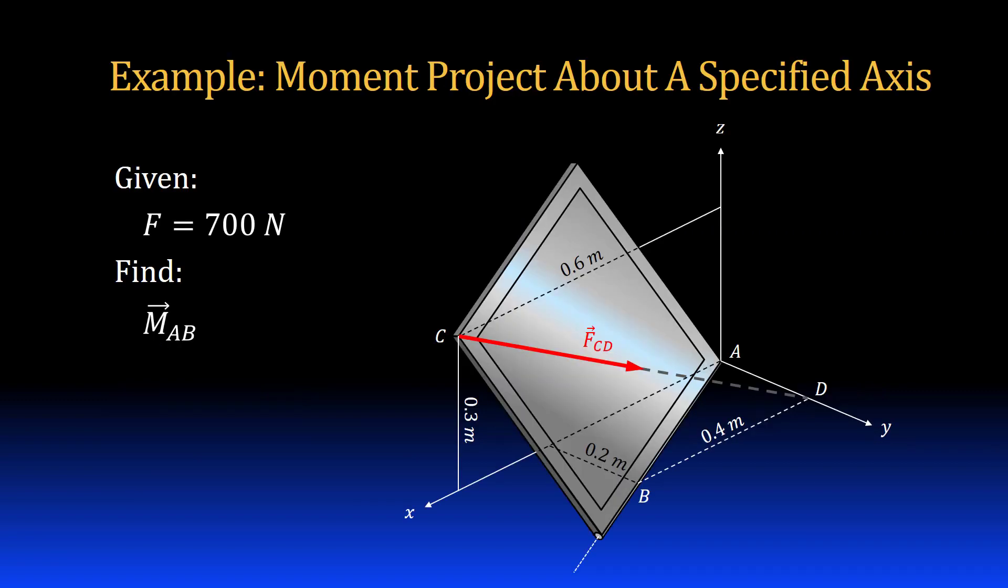In this example we have a hinged door acted on by a force. The hinge is oriented along line AB. The force is acting on point C of the door in the direction of point D. We are given the magnitude of the force 700 newtons and enough dimensions to find the moment the force causes about the axis of the hinge.